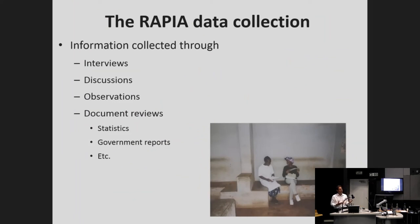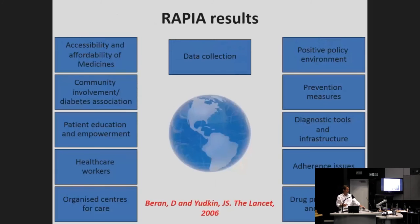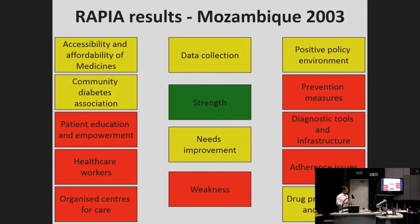Data in these tools is collected through interviews with convenience samples rather than random sampling, discussions, observations, and document reviews of existing statistics and government reports. The work looks at different elements of a system — data collection tools, the policy environment, drug procurement and supply, and adherence issues. This is illustrated visually in results from a study in Mozambique in 2003, showing where certain interventions could be targeted — recognizing that these elements are integrated. You can't change healthcare worker training if you don't improve availability of diagnostic tools and access to medicines.